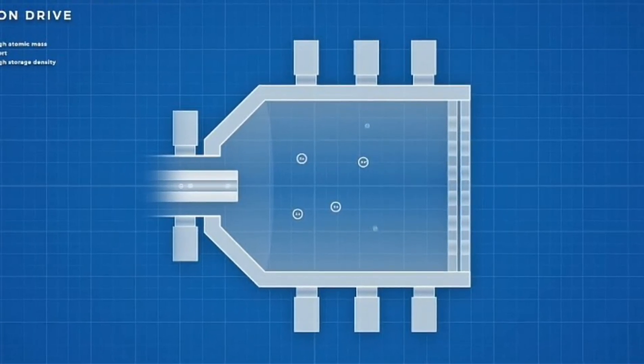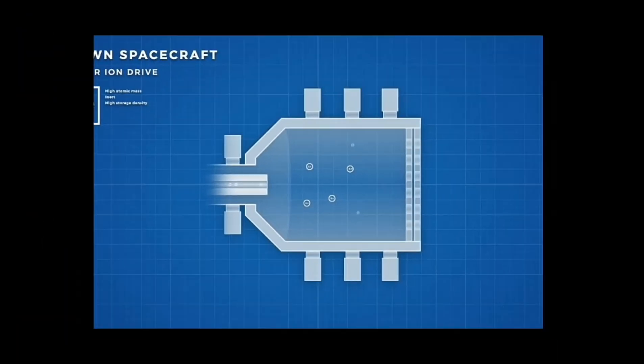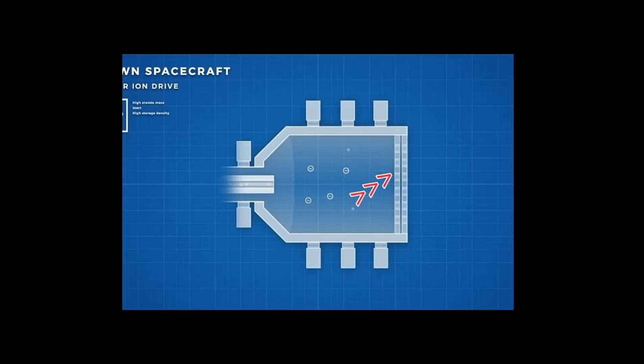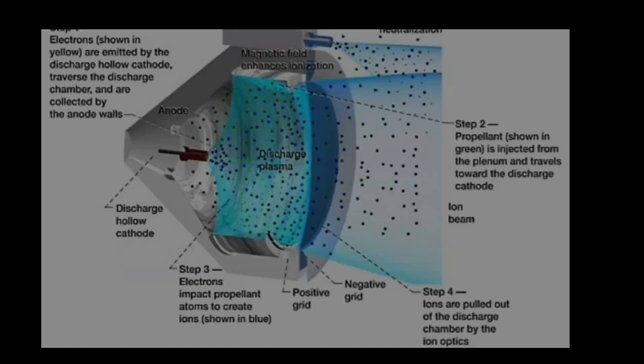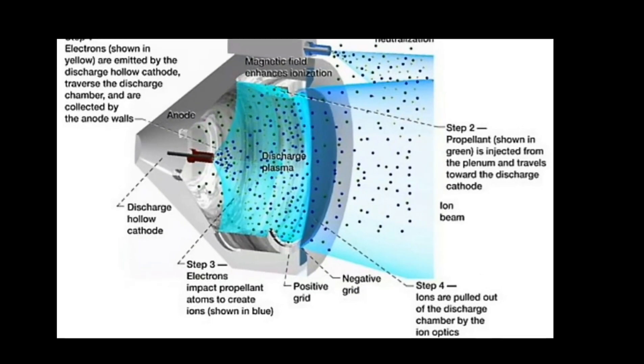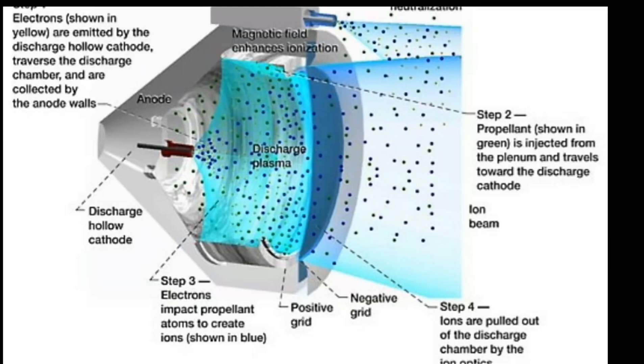The positive-charged ions migrate towards the grids that contain thousands of very precisely aligned holes. The first grid is the positive-charged electrode, or screen grid.